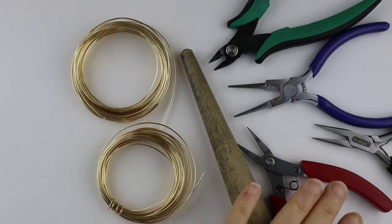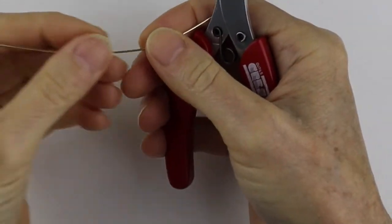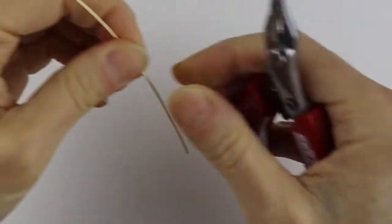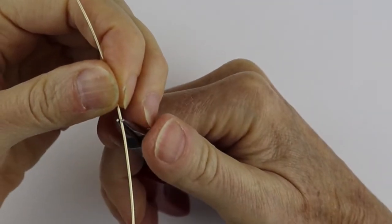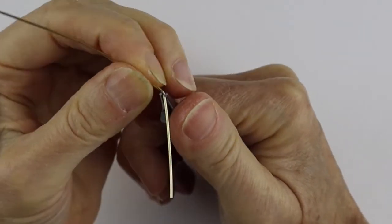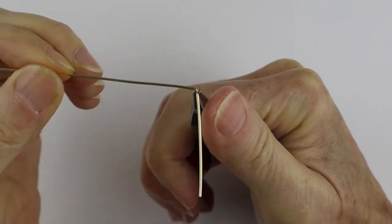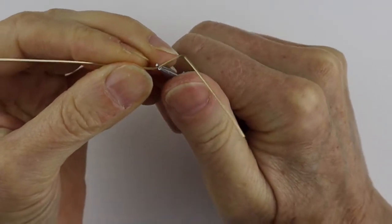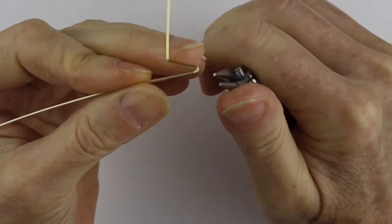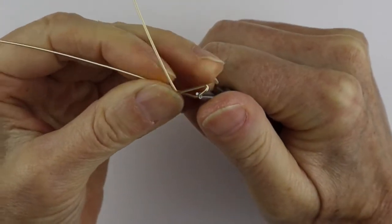We'll start by doing the letter A with my round pliers. These have a really nice fine tip to them, so we're going to bring the wire up at an angle and then we want to form the triangle part of the A.